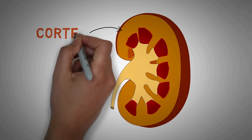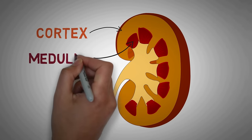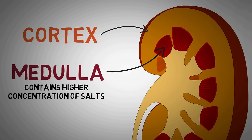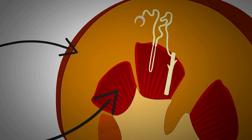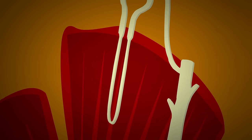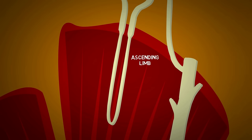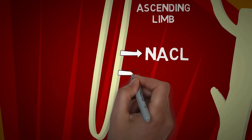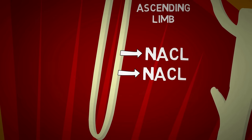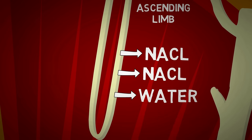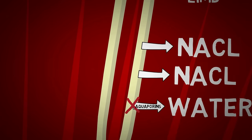Here is a section of the kidney showing the outer cortex and inner medulla. The inner medulla is a very important region as it contains a higher concentration of salts compared to the cortex. This higher salt concentration in the medulla is made possible by the loop of Henle. The loop has a descending limb and an ascending limb. The ascending limb contains special ion channels that pump out ions like sodium and chloride, making the renal medulla more salty or hypertonic. However, the ascending limb does not allow water to move out as it has no aquaporin channels in its wall.